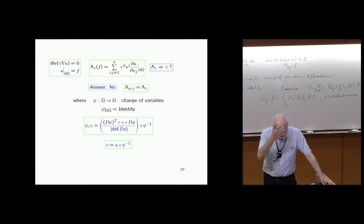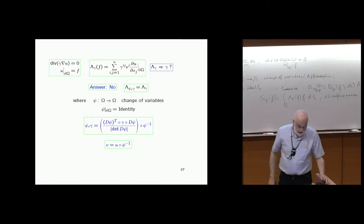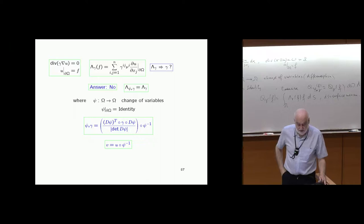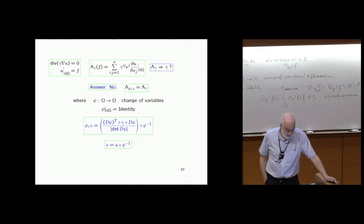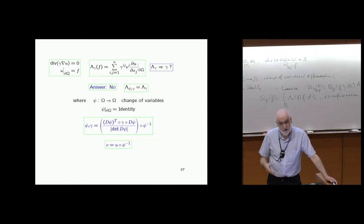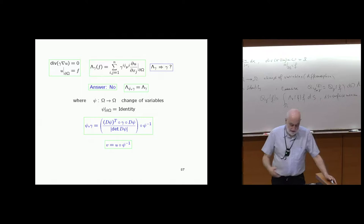In practice with an anisotropic situation, recovering the full conductivity matrix is not feasible — we know it's not possible. But you may want to recover some features, such as discontinuities or an eigenvalue of the matrix, like the largest eigenvalue, which is not invariant under changes of coordinates. In most practical situations, you know something a priori about what you're trying to recover, so you might be able to fix the change of variables.